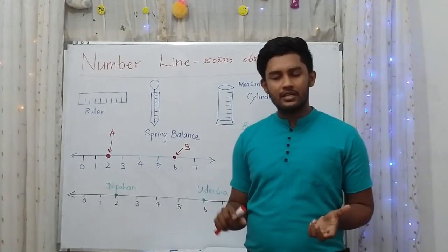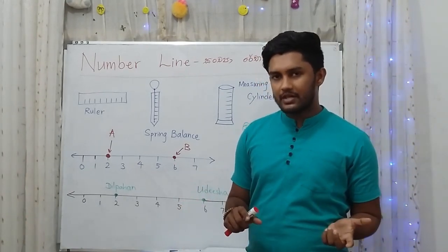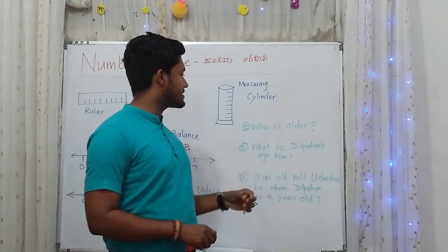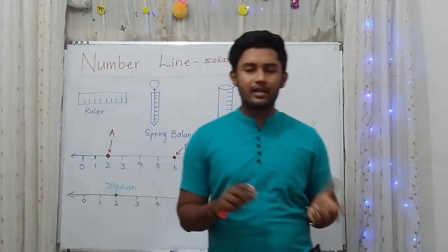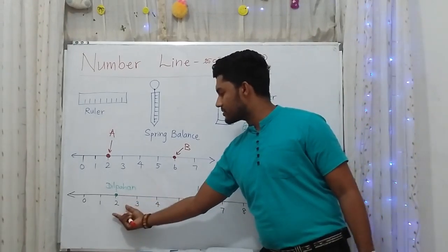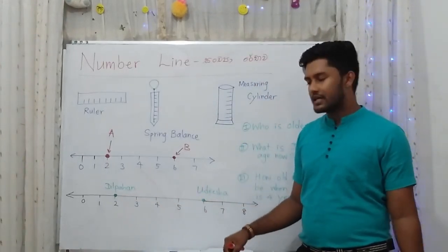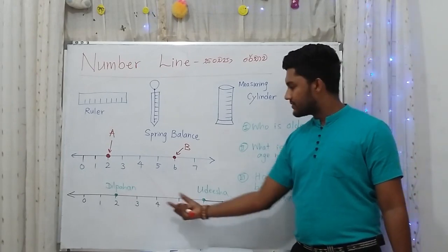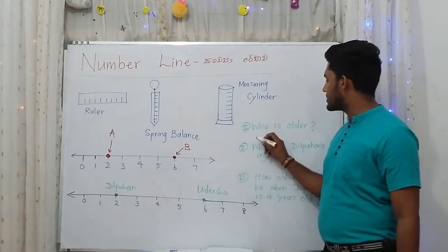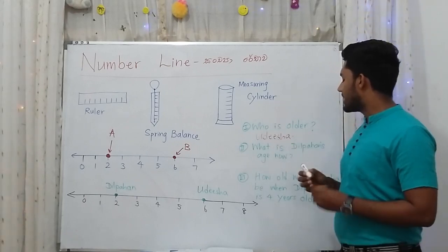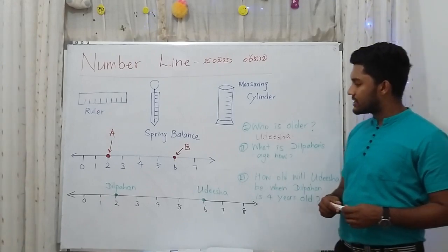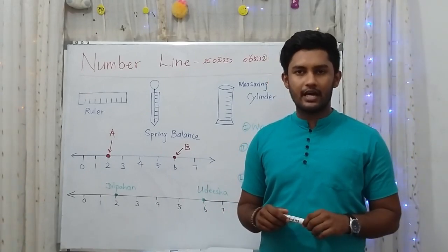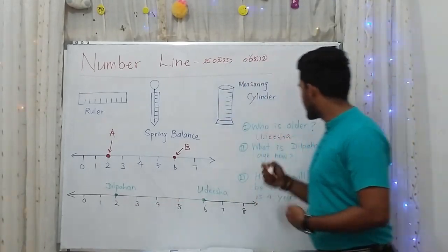Look at the gap between the two students on the number line. The first question is: who is older? Udisha is the eldest of the two students. The second question: what is Dilpahan's present age? The answer is two years.